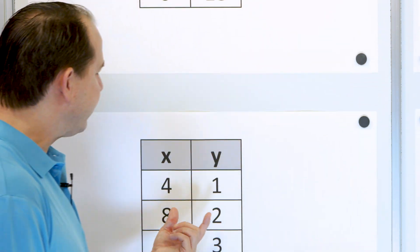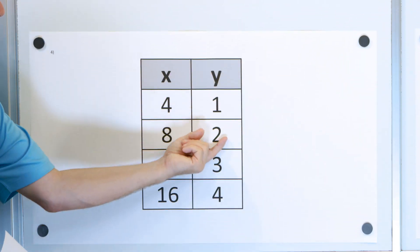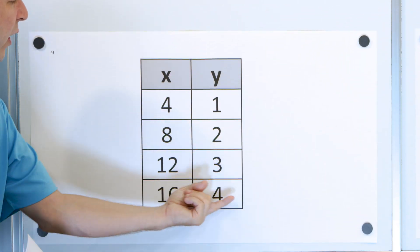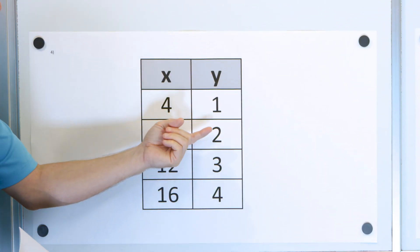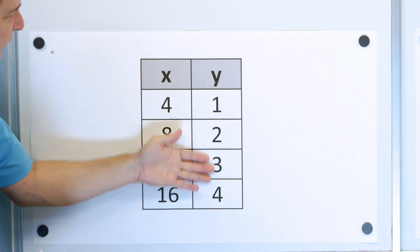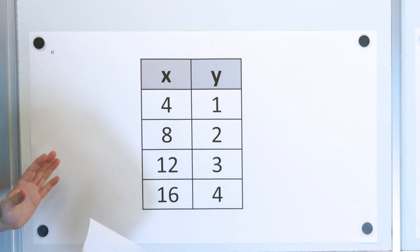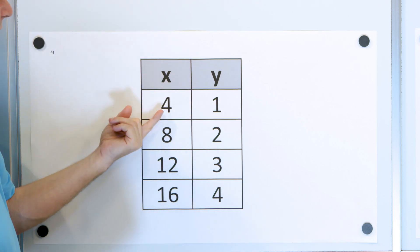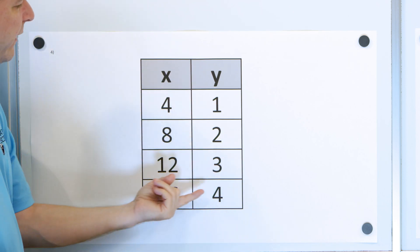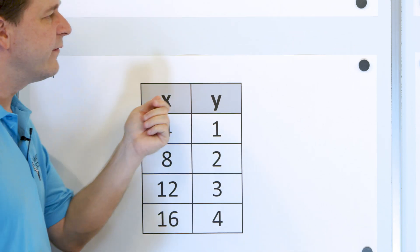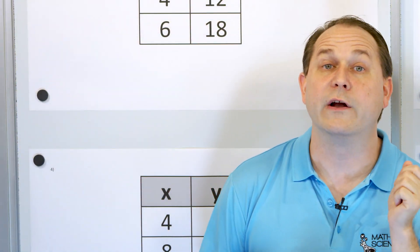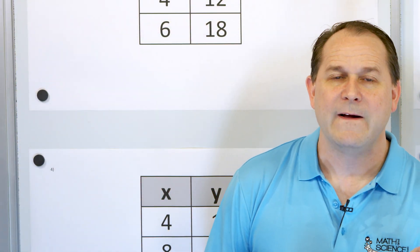In the second example, when we divide those numbers we always get one-fourth. Even though all the numbers look totally different and it seems like there's no relationship, when we divide we always get one-fourth. So the constant of proportionality is one-fourth.